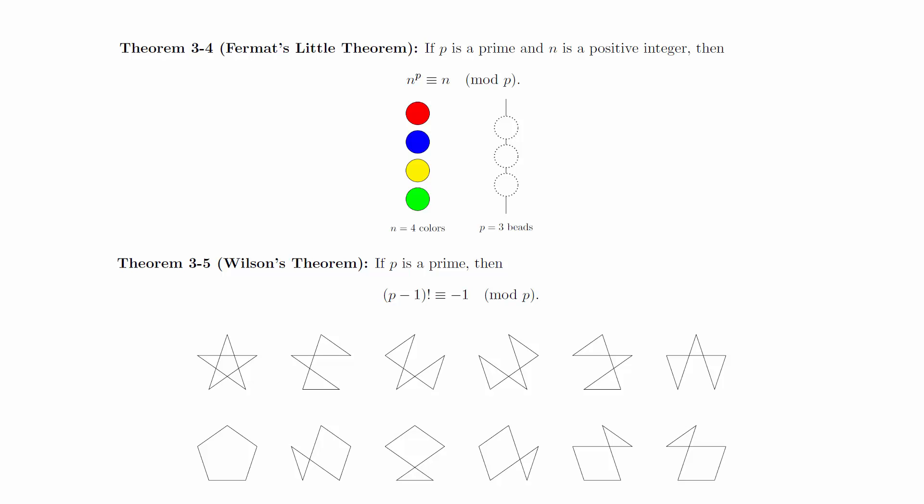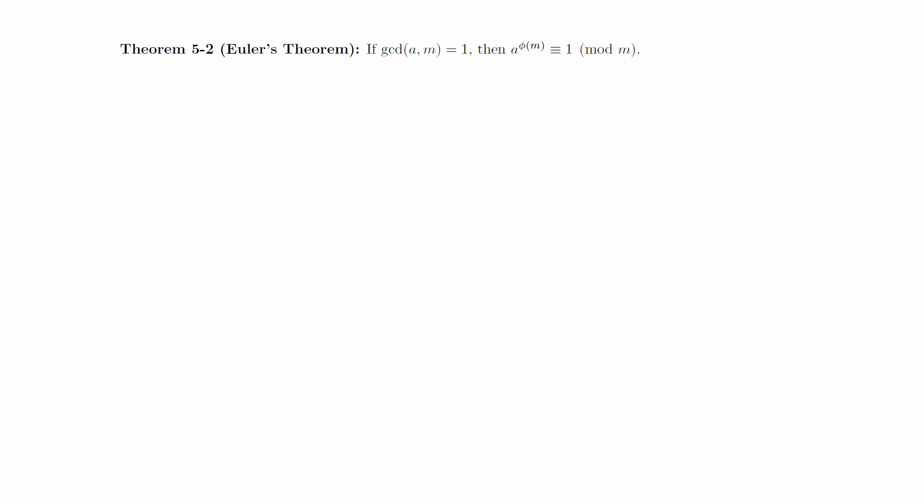We're going to prove these theorems again, but we're going to prove them as corollaries of two more general theorems. If the GCD of a and m is 1, then a to the phi of m is congruent to 1 modulo m.